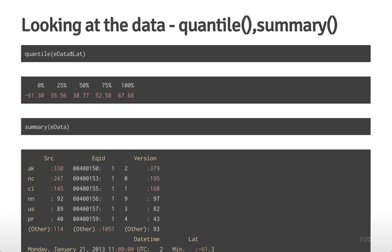For quantitative variables, you can look at the quantiles of the data. Quantiles are like percentiles — similar to SAT scores where the 99th percentile means 99% of people scored lower than you. Applying quantile() to edata$lat gives you the 0th, 25th, 50th, 75th, and 100th percentiles, giving you an idea of the range and the middle of the values. If you saw a latitude of 5064, you'd know that was either on a very different scale or an incorrect value.